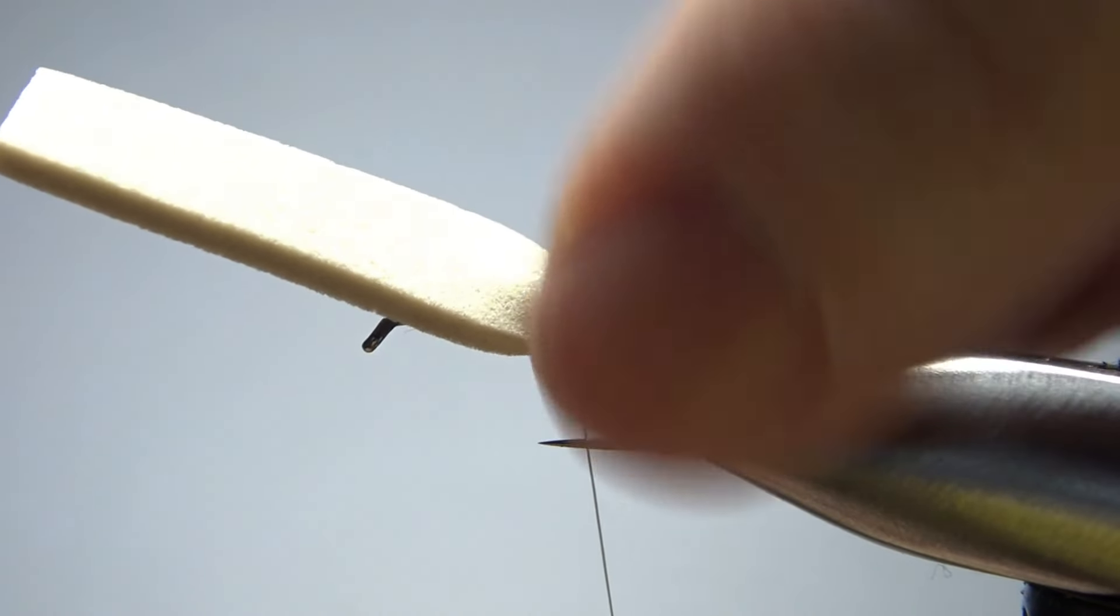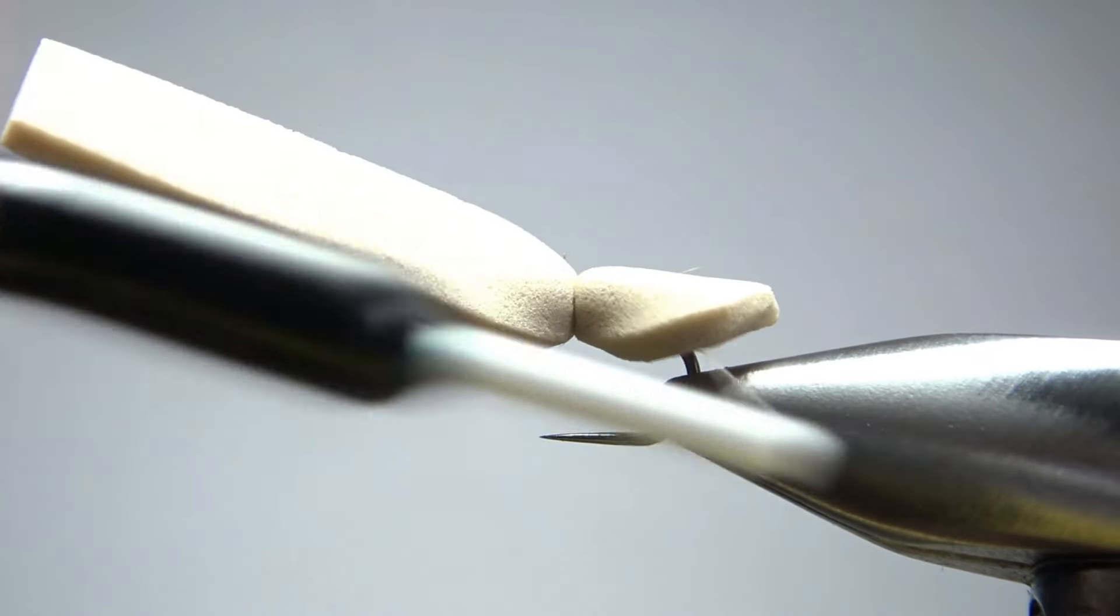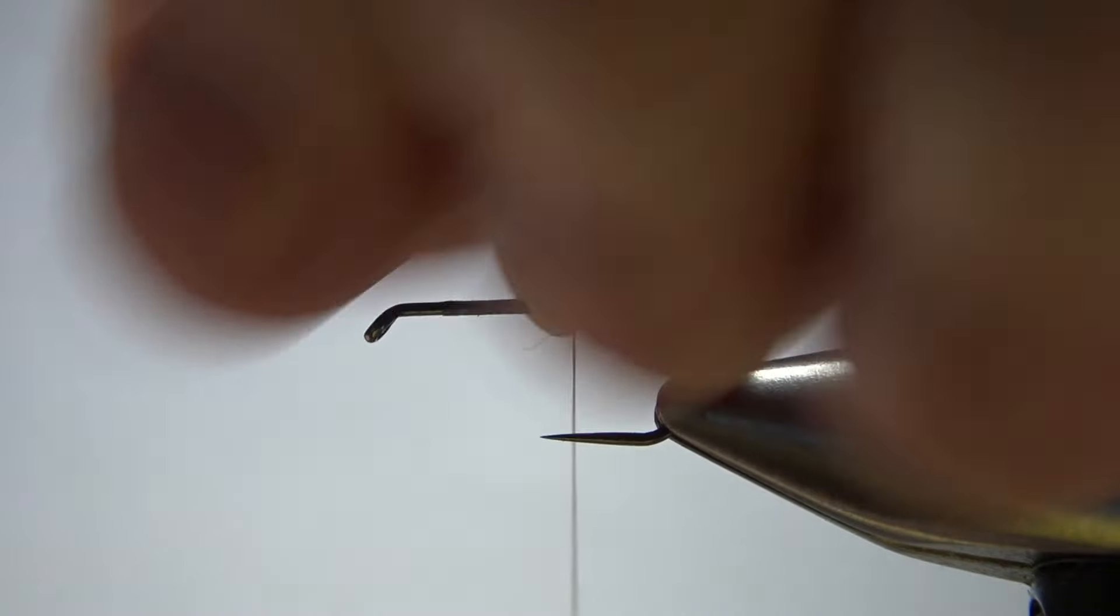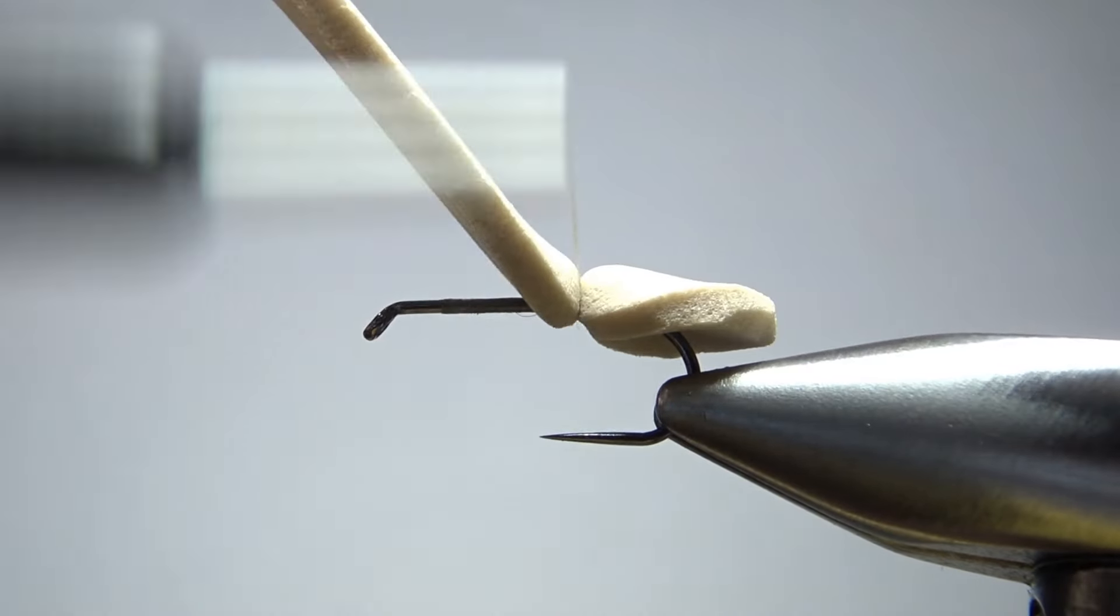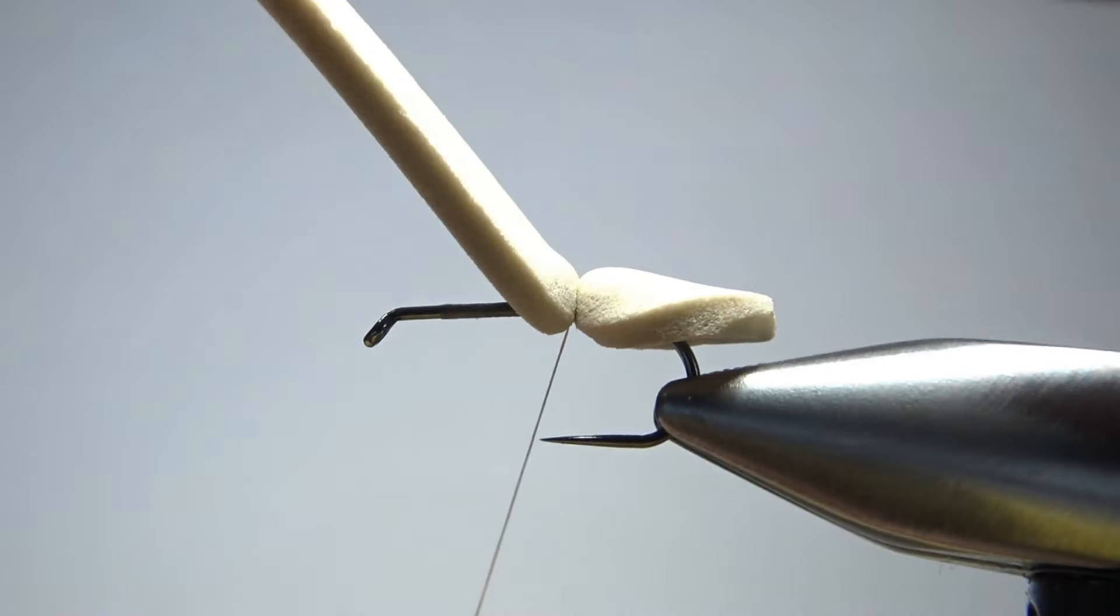But what I will do, I'll put a couple wraps under, over, under, and over. Sometimes that will help keep it from spinning on you. Okay, that's enough of a back end right there.